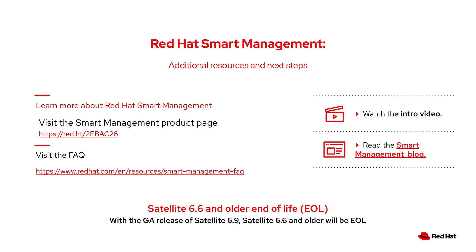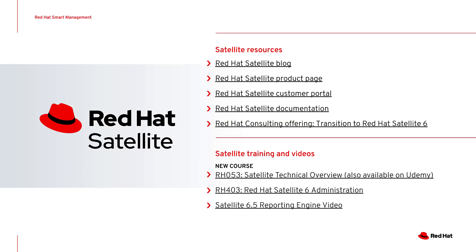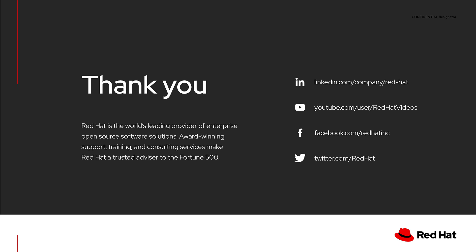A few resources to close us out. We've got your basic information about Smart Management — you can visit our FAQ and be sure to follow us on our blog. You'll also find that within Satellite, if you've set the default notification drawer settings, you should get notifications whenever we get a new release of Satellite right within Satellite itself. It is also important to note that with the release of Satellite 6.9, Satellite 6.6 and older will be end of life. We have a number of satellite-specific resources: our satellite blog, courses if you're fairly new to satellite — RH053 is a base level technical overview available on Udemy and YouTube, and RH403 is our Satellite 6 administration course. Thank you for your time and hopefully you found this information valuable.